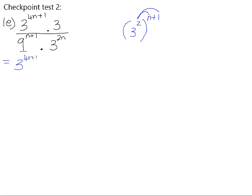So that will leave us 3 to the 4n plus 1 multiplied by 3. Remember that the exponent on that is positive 1 if it's not filled in. And then in the denominator, we will have 3 to the 2n plus 2 times by 3 to the 2n.